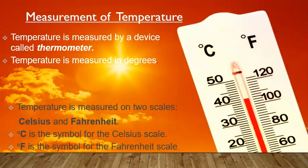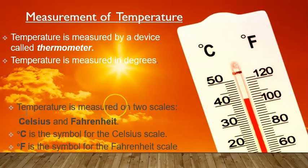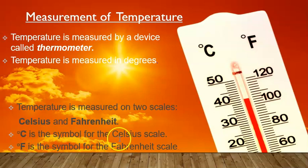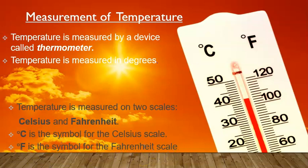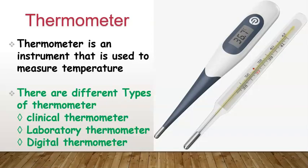Next is the measurement of temperature. Temperature is measured by a device called a thermometer. Temperature is measured in degrees, and there are two scales: one is Celsius and the other is Fahrenheit. The symbol for the Celsius scale is degree Celsius (°C), and the symbol for the Fahrenheit scale is degree Fahrenheit (°F). A thermometer is an instrument used to measure temperature.